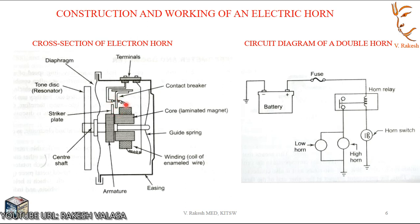When the contact point is open, the electric current going through the electromagnet is stopped and it is de-energized, resulting in the armature and diaphragm coming back to their original positions. As soon as the diaphragm, armature, and center shaft move back to their original position, the contact point again closes and current starts flowing into the electromagnet, which again attracts the armature. In this way, the diaphragm and armature go on vibrating. The vibrating diaphragm causes the vibration of the air column around it, and the vibration of the air column subsequently produces sound.